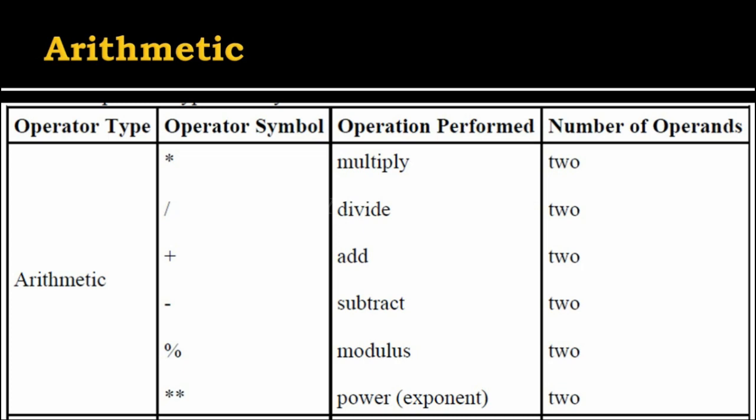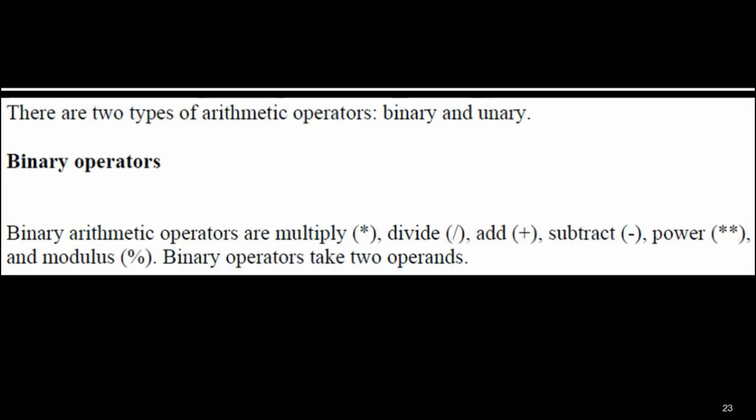First, the arithmetic operators. There are two types: binary and unary. Binary arithmetic operators include multiply, divide, add, subtract, power (exponent), and modulus. All arithmetic operators refer to two operands. The binary operator takes two operands.